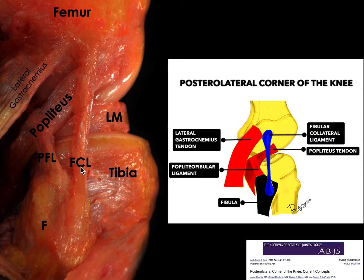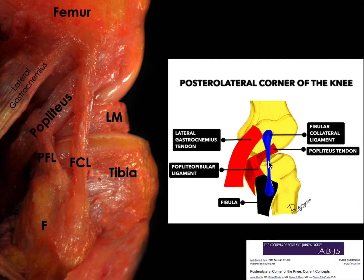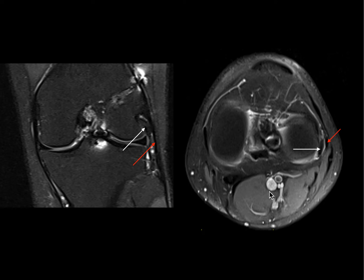Coming to the fibular collateral ligament, also called the lateral collateral ligament, you can see it arising from the femur to the fibula. This similar anatomical illustration clearly shows the structures closely related to the posterolateral corner, including the popliteofibular ligament, the fibula, and the fibular collateral ligament — also called the lateral collateral ligament — which is a static stabilizing structure of the posterolateral corner.